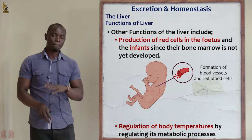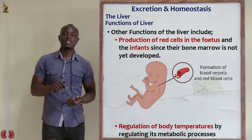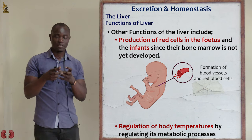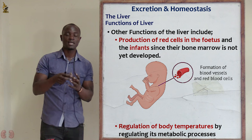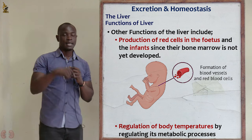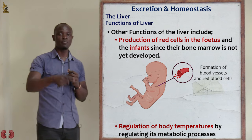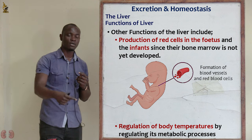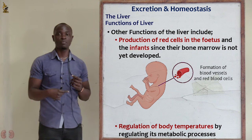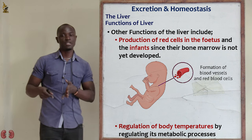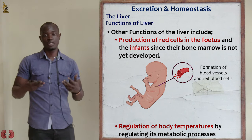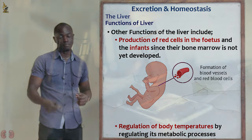When body temperatures become high, the metabolic processes of the liver reduce, causing liver temperature to go low. The blood passing through the liver is then cooled down, and as this cooled blood circulates through the whole body, the body temperatures also decrease back to normal.